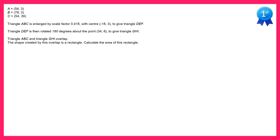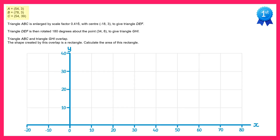Hello and welcome to the solution video for spicy question number 23. We're going to start this question by plotting the points A, B and C onto a grid. Here we have some axes and we can plot A which is at (54,3), B which is at (78,3) and C which is (54,39). This completes the triangle ABC.